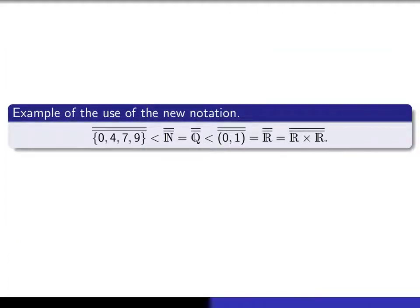In this example, I'm just simply going to illustrate the use of this new notation. The set {0, 4, 7, 9} is a finite set, N is a denumerable set. There's no way you can get a surjection from a finite set onto an infinite set, and therefore this cardinality is strictly less than this cardinality.